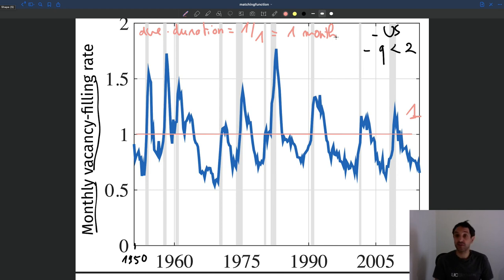So it's something that's quite substantial. And you can see again, this vacancy filling rate is moving around a lot over time. So exactly as a job finding rate, you have big cyclical fluctuations. So in recession and expansion, things are very different. So what do we have here? So what happens in recession?